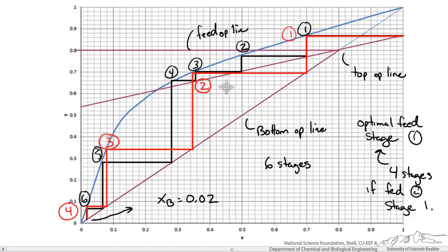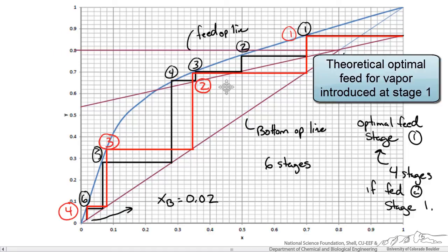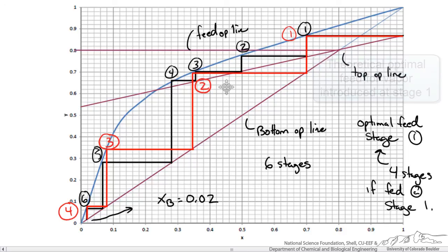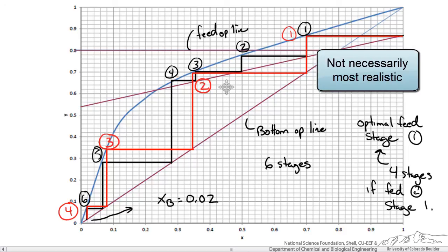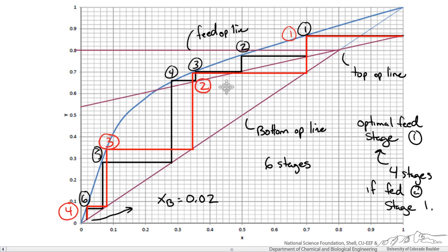Hopefully this gives you an idea on how to write the balances for a column regardless of the type of conditions you are given. You can see that if a feed does not enter a column at its optimal position you may have to have more stages than necessary to achieve the same separation.